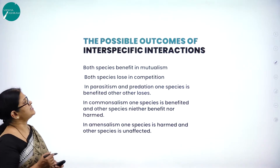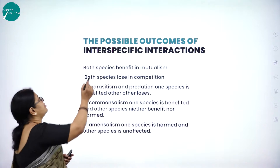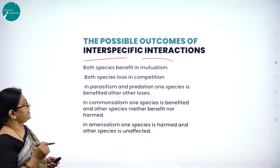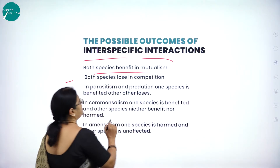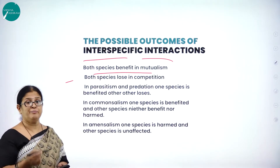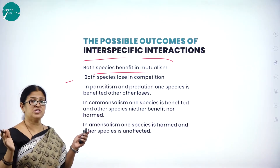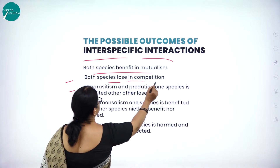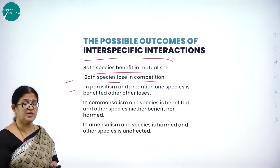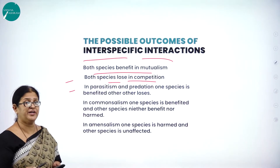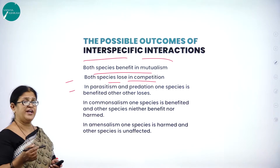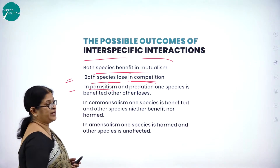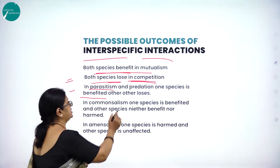Now let us understand the possible outcomes of interspecific interactions. In mutualism, both species benefit. In competition, both species lose — because when two different species have different food habits and habitats, both species lose in competition. In parasitism and predation, one species is benefited and the other loses.